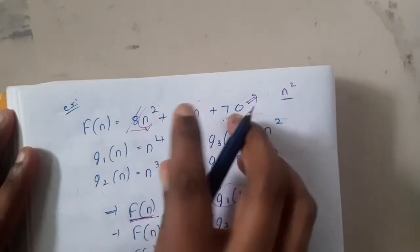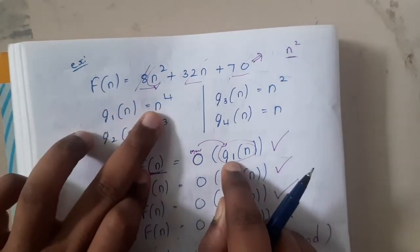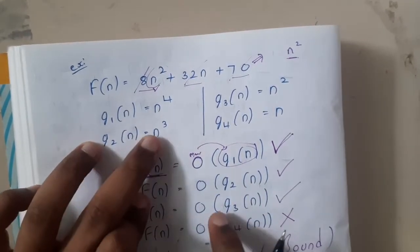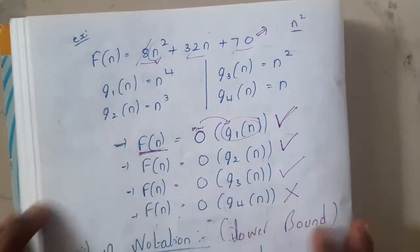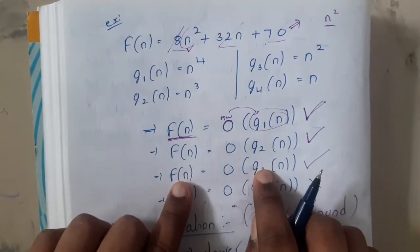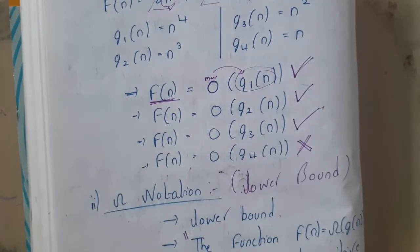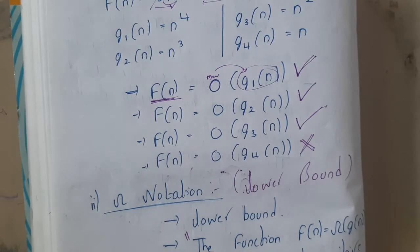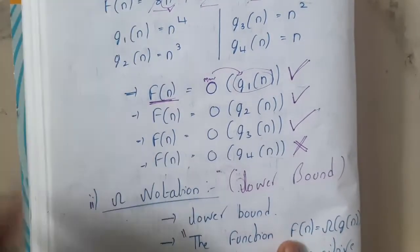Given options g1=n⁴, g2=n³, g3=n², g4=n, is f(n) = O(g(n))? After simplifying, f(n) ~ n². Big O means g(n) must be ≥ f(n). n⁴ > n²: true. n³ > n²: true. n² ≥ n²: true (equal to is included). n > n²: false. So g1, g2, g3 are valid Big O bounds; g4 is not.